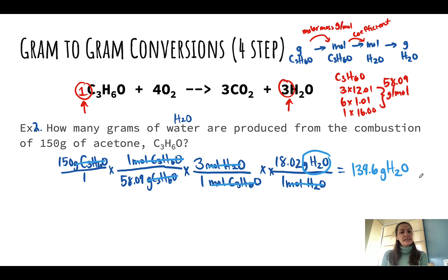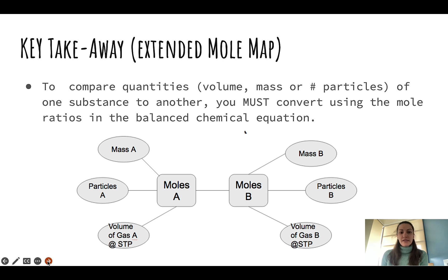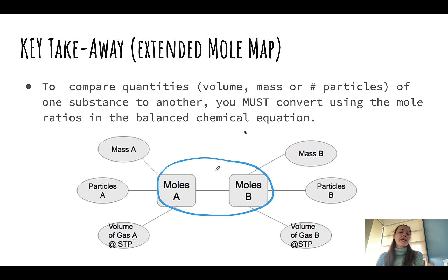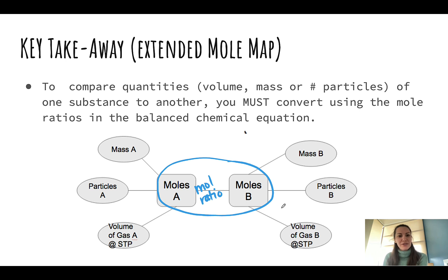So this is an example of how you might use this problem — a gram to gram conversion — but you'll see things in all different ways. You might start with a number of particles and go to mass of a different substance, or start with mass of one substance and measure the volume of gas produced. It doesn't matter what you start with: you will always need to go through your mole relationship to compare ratios in a balanced equation. You need to use your mole ratio to compare two different substances together. Now we're going to give you some time to do some practice. Thanks so much!